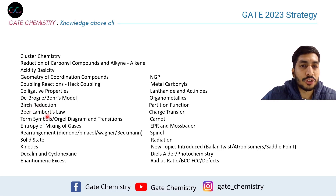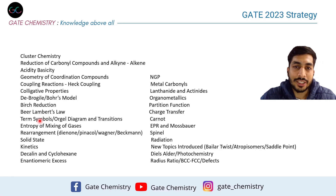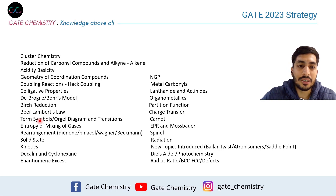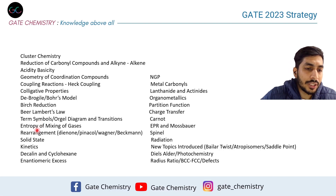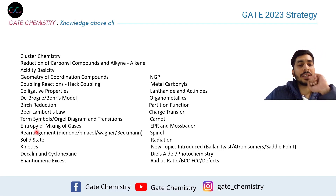Term symbols and Orgel diagrams — familiarize yourself with what transitions are favorable and what transitions are disallowed. Entropy of mixing of gases is a favorite in the GATE exam — for example, given two ideal gases, what is the entropy of mixing.